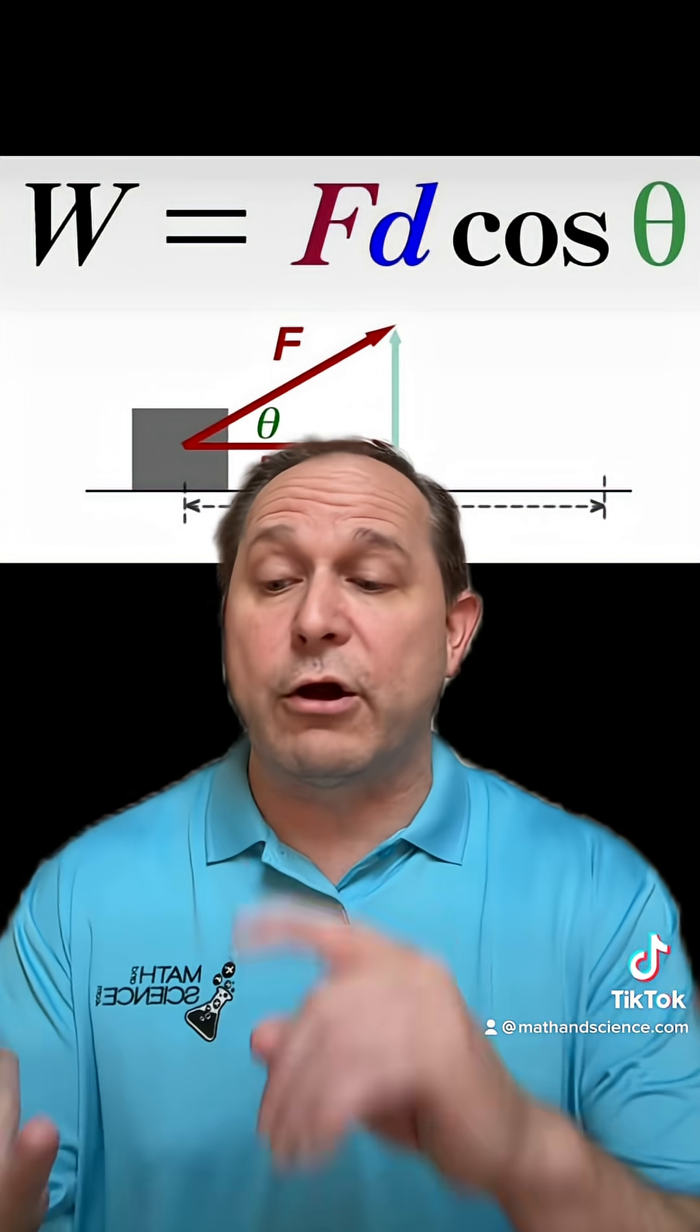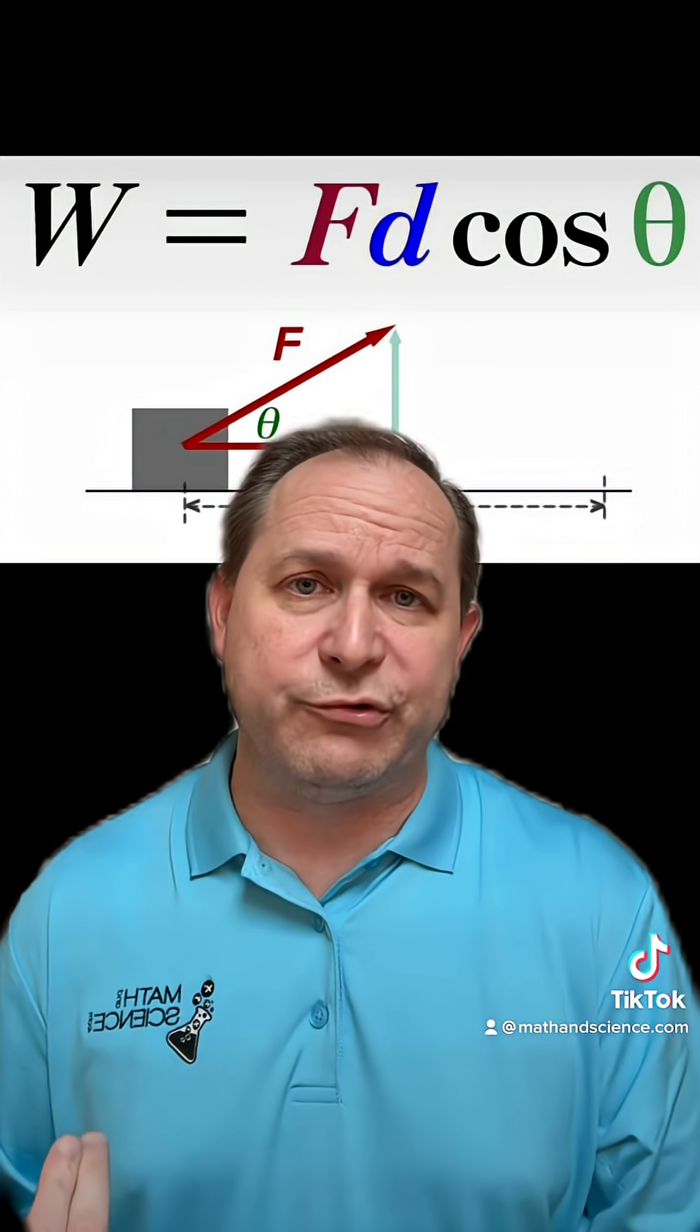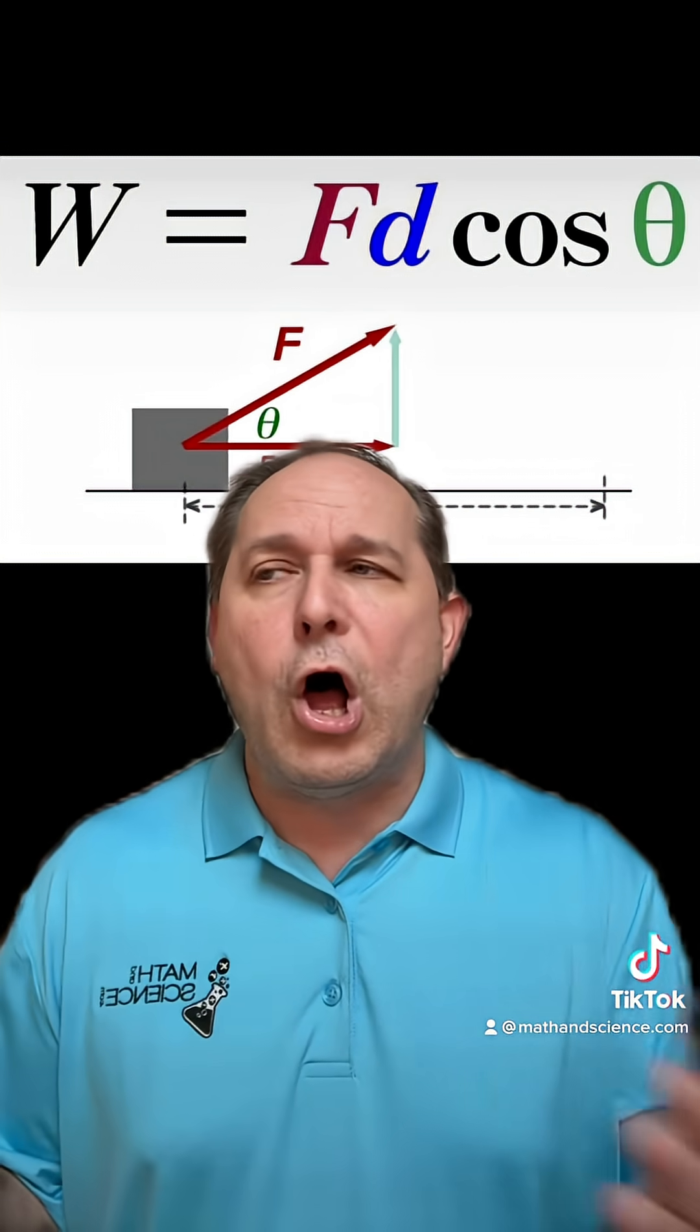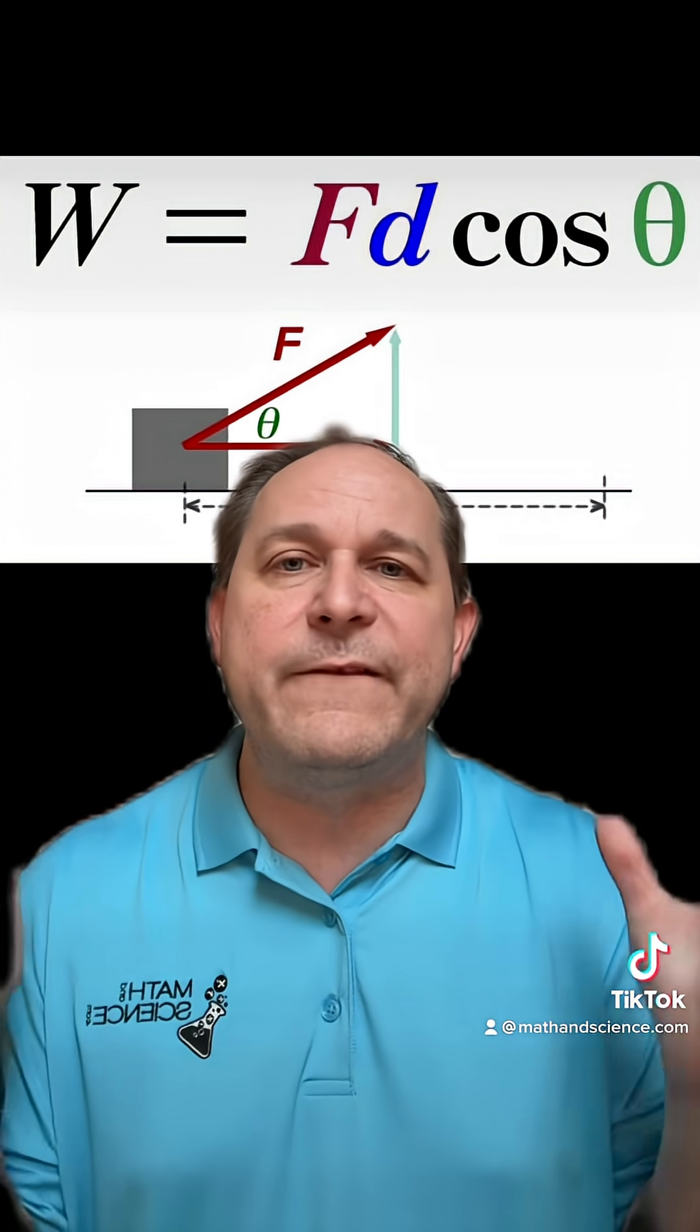When you learn about kinetic energy, the units are in joules, but the units of potential energy are also in joules, and the units of work are also in joules. All of these different things have the same units. What do they mean? What is the physical difference?